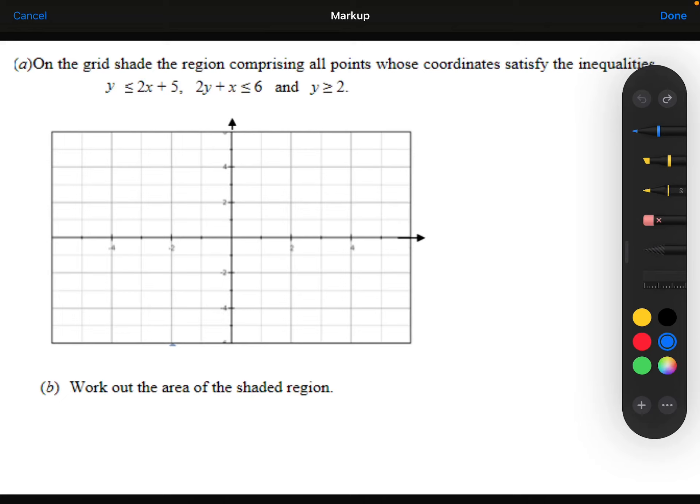On the grid, shade the region comprising all the points whose coordinates satisfy these inequalities. So let's start with y is less than or equal to 2x plus 5.